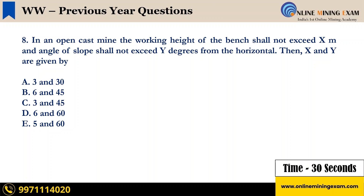Next question. In an open cast mine, the working height of the bench shall not exceed X meter and angle of slope shall not exceed Y degrees from the horizontal. Then X and Y are given by — A: 3 meter and 30 degree, B: 6 meter and 45 degrees, C: 3 meter and 45 degrees, D: 6 meter and 60 degree, E: 5 meter and 60 degree.